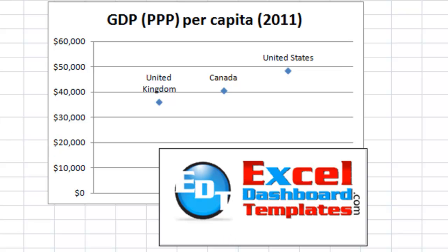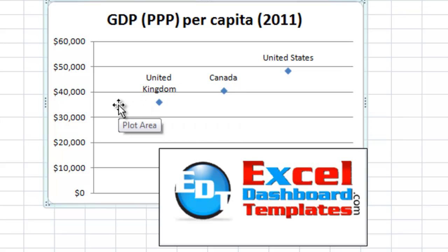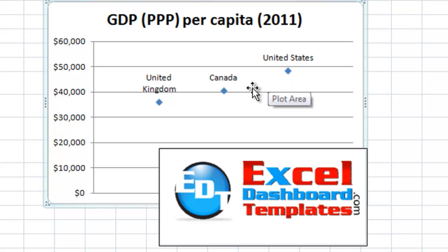Today we're going to show you how to do custom markers. I've created this chart here with the United States, Canada, and the United Kingdom plotted for their GDP per capita for 2011. I've added labels so you can see which point is what, but we can make this more interesting and have your clients see the data more effectively and quickly.